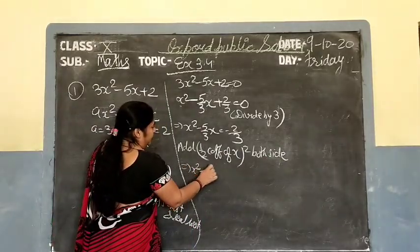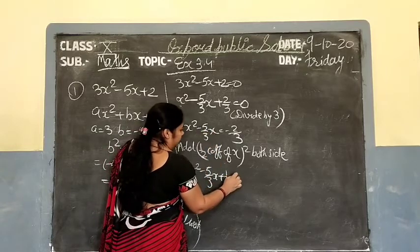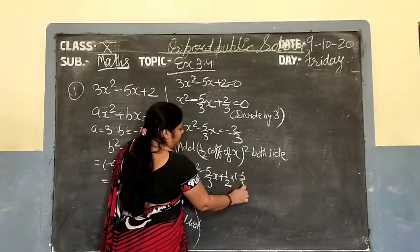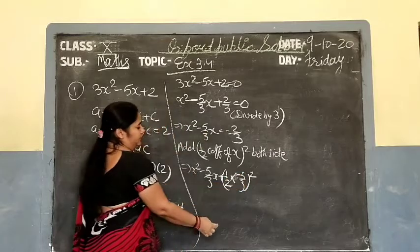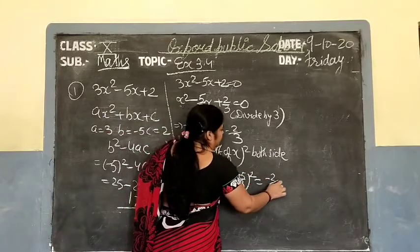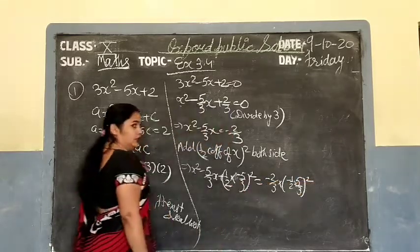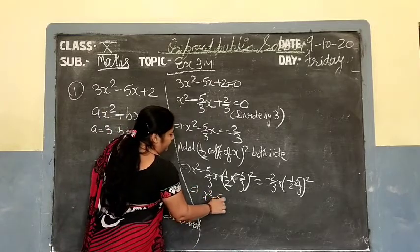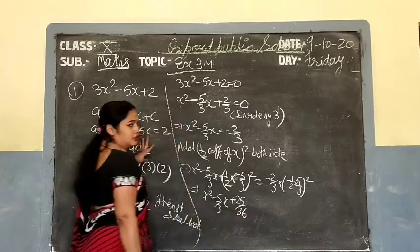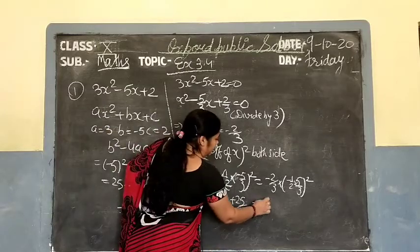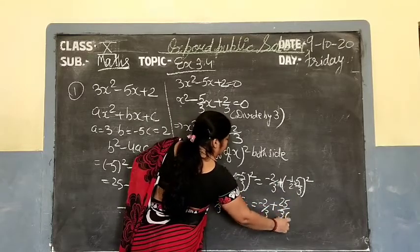Now: x square minus 5 upon 3 times x plus one-half of coefficient of x, which is minus 5 upon 3, whole squared, equals minus 2 upon 3 plus one-half times 5 upon 3 whole squared. Add to both sides. So we get x square minus 5 upon 3 x plus 25 upon 36 whole squared, equal to minus 2 upon 3 plus 25 upon 36.